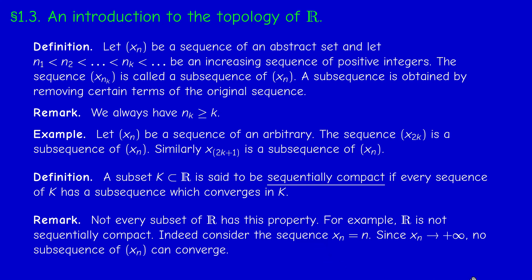More generally, if you take an unbounded set, an unbounded set cannot be sequentially compact because if it's unbounded, it contains a sequence tending to infinity - same reasoning. So Q is also not sequentially compact, R without Q is also not sequentially compact, the integers are not sequentially compact.